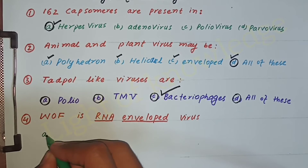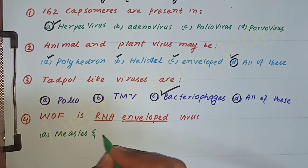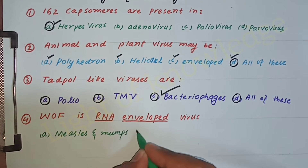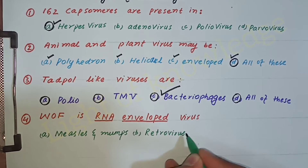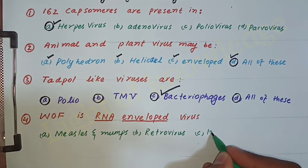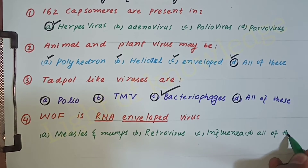Question number four: Which one of the following is an RNA enveloped virus? Measles and mumps, retrovirus, influenza, or all of these? All of these are RNA enveloped viruses.